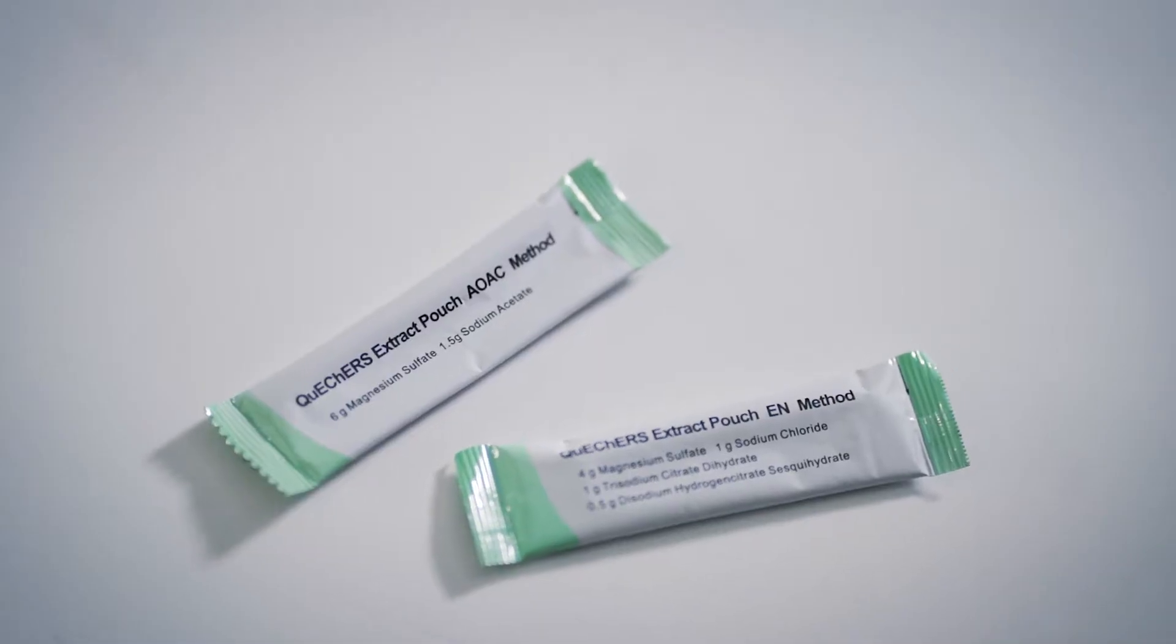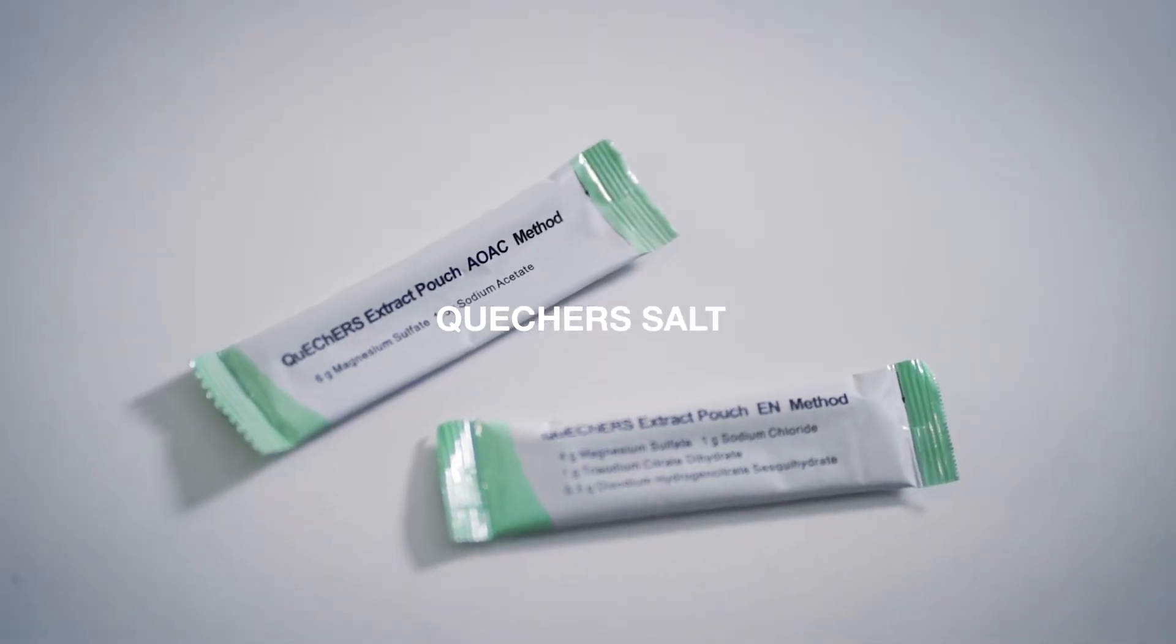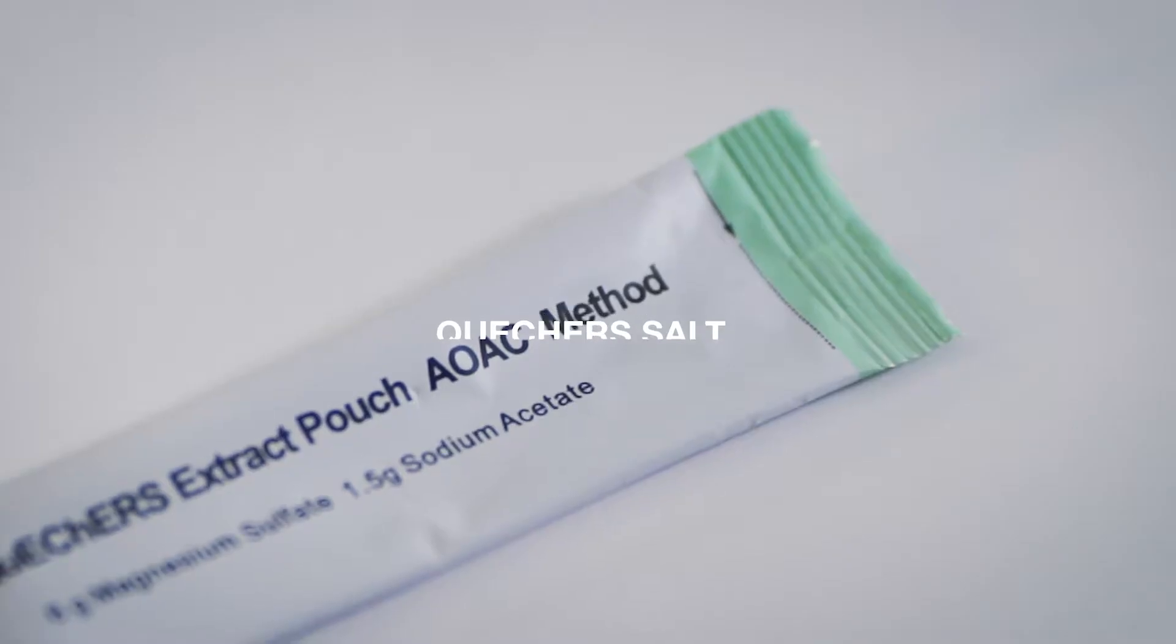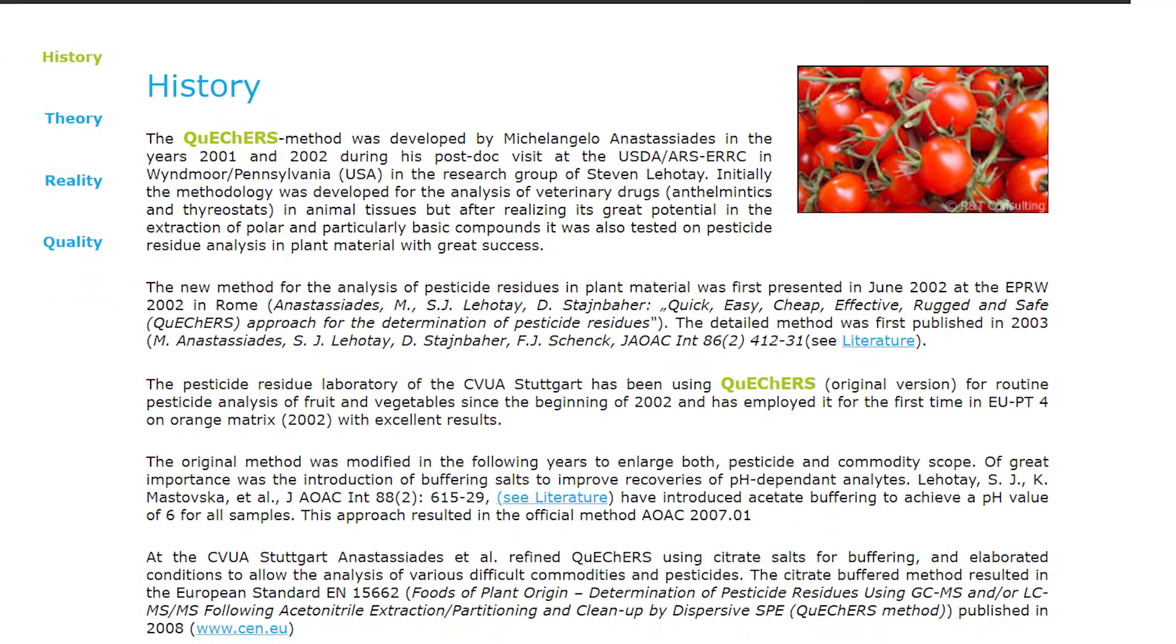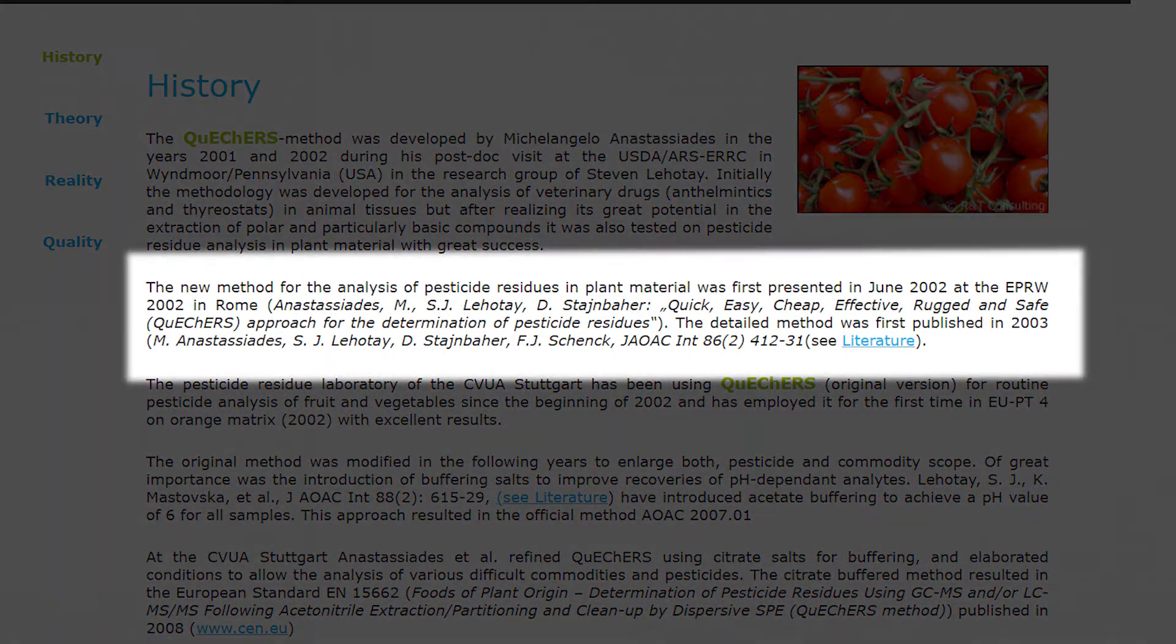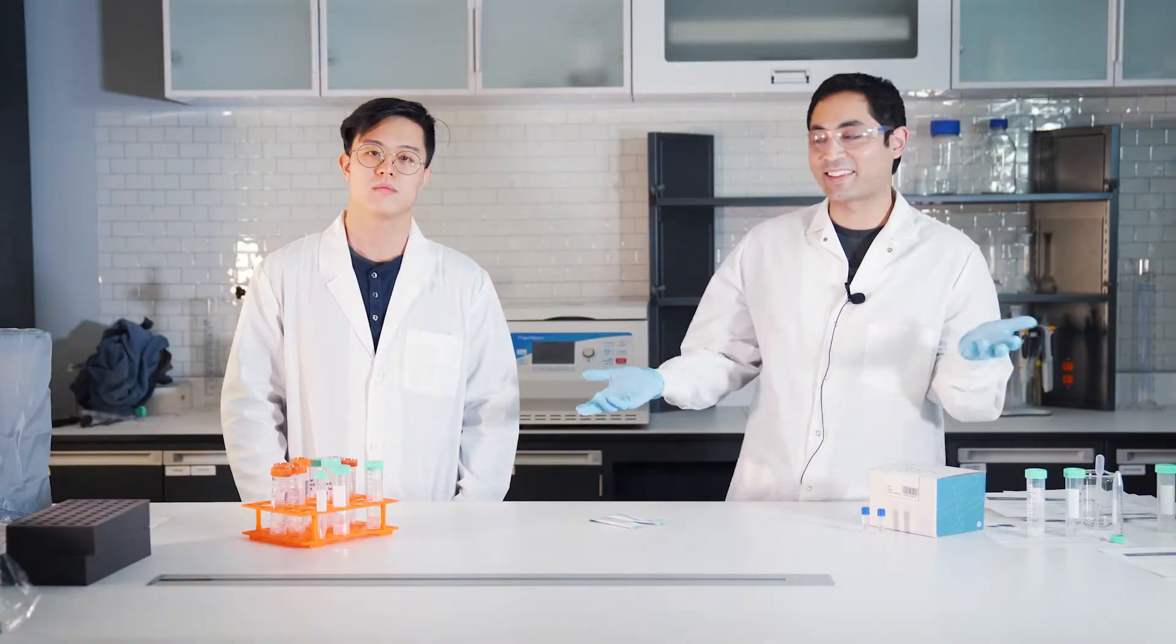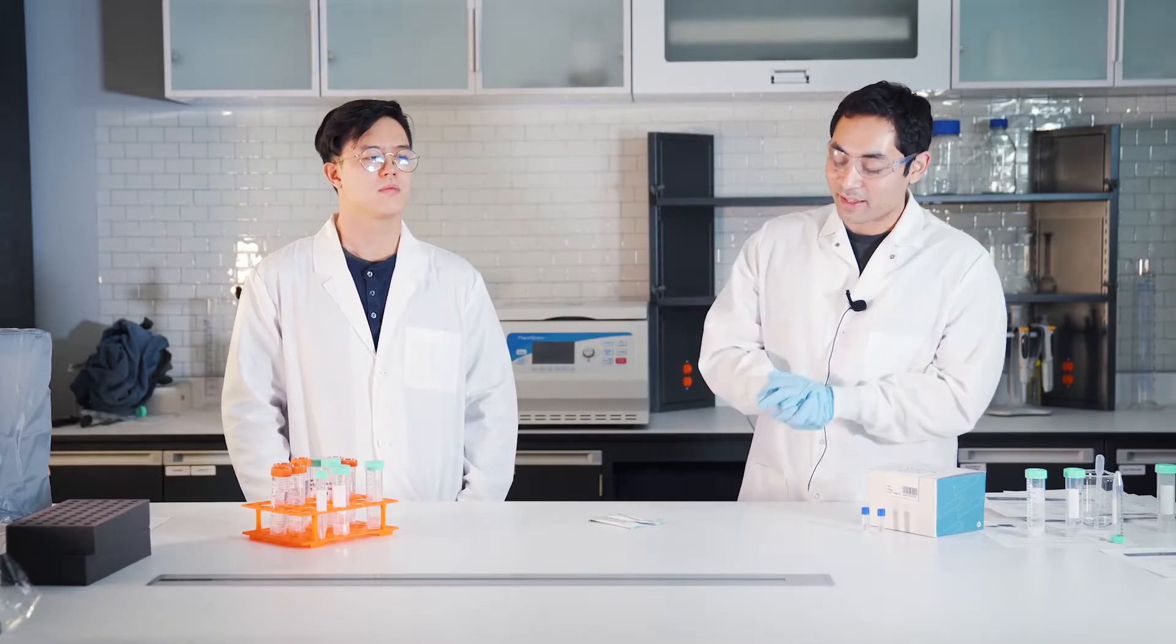First let's talk about the QuEChERS salt. There's two methods. The first method was an AOAC method. The guys that came out with this method are Anastassiades, Lehotay, Stajnbaher, and Schenck. They're getting a lot of royalties - I don't know, probably not - but they came out with a great method and a lot of people use this.